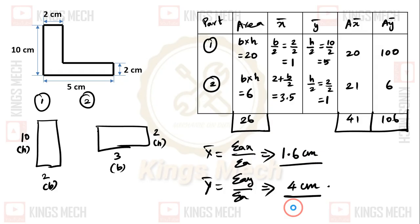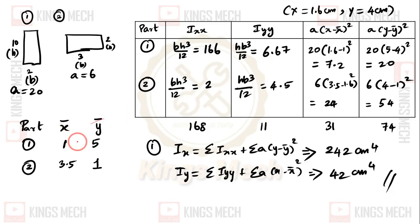x̄ and ȳ are 1 and 5, and 3.5 and 1. Ixx and Iyy use summation of A into x minus x̄ whole square and A into y minus ȳ whole square. The formula is bh³ by 12. The value of b is 2, h is 10, so 2 into 10³ divided by 12. Likewise hb³ by 12, which is 10 into 2³ by 12. Then area into x minus x̄ squared. The value of x is 1.